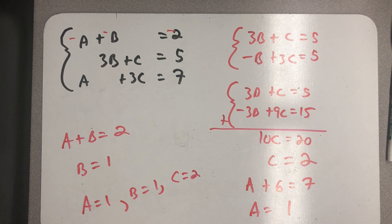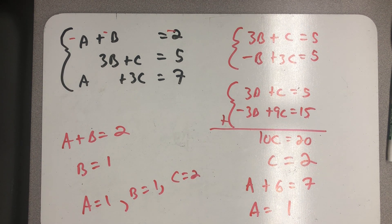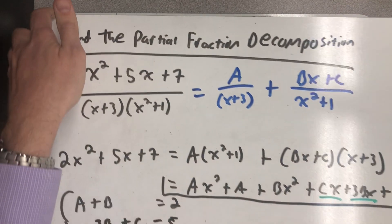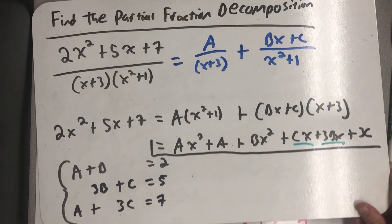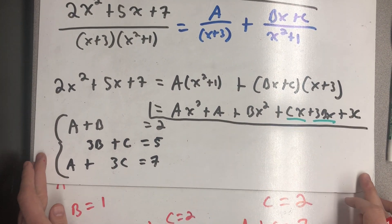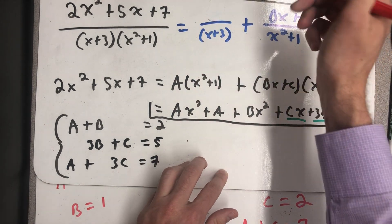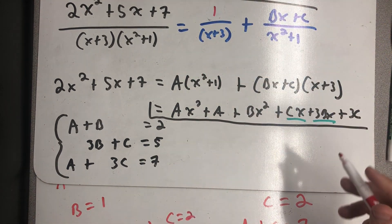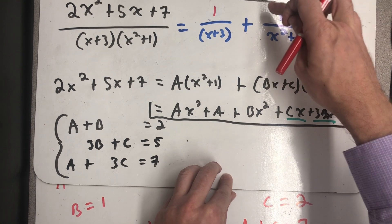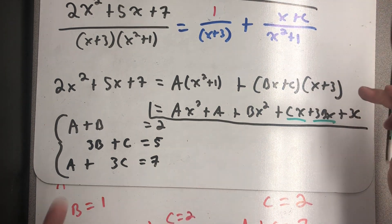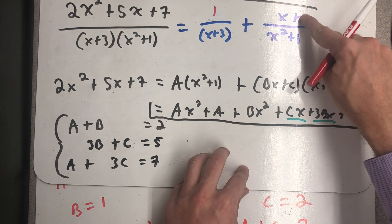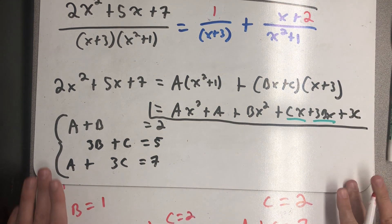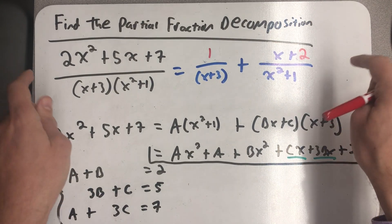Going back to my original setup, I can write down my partial fraction decomposition. a is 1. b is also 1, so I have 1 times x. And then plus c, c is 2. And there is my partial fraction decomposition.